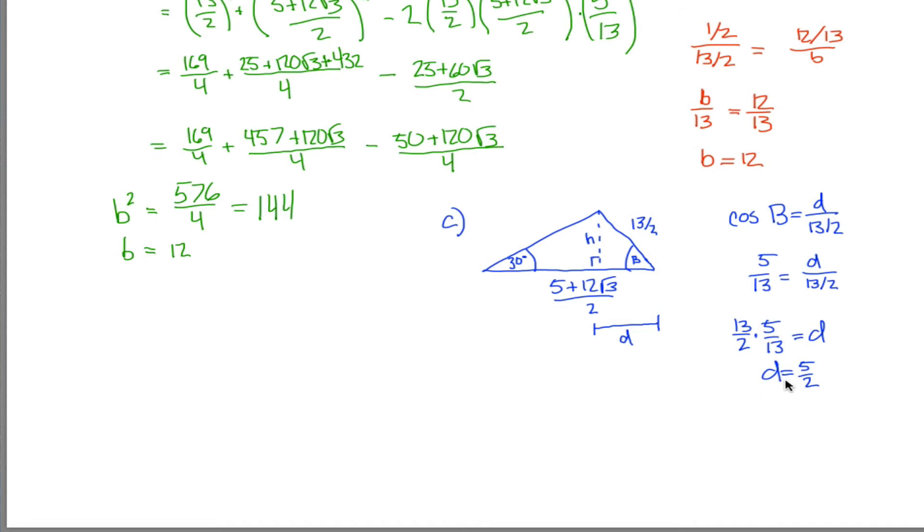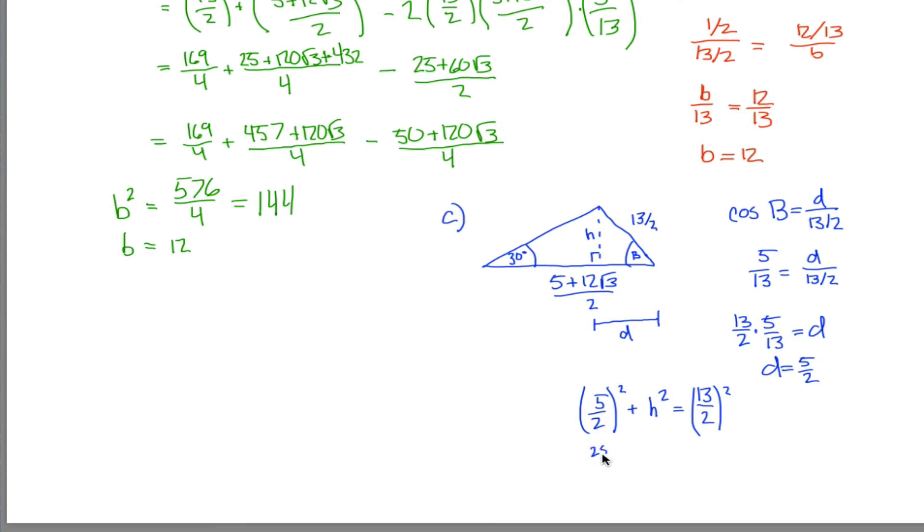And how should I do that? Let's use Pythagorean Theorem. So let's say that 5 halves squared plus H squared is equal to 13 halves squared. Okay, so 5 halves squared is 25 fourths, and that plus H squared is equal to 169 fourths. If I subtract 25 fourths from both sides, I get that H squared is equal to 144 over 4. Take the square root of both sides and you get that H is equal to 12 over 2, aka 6.